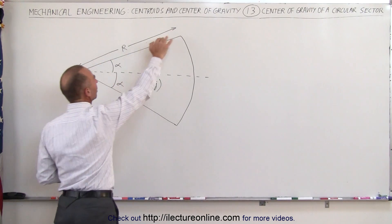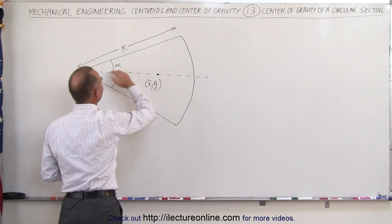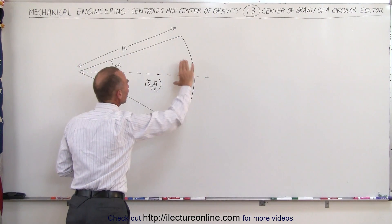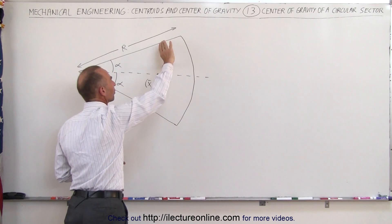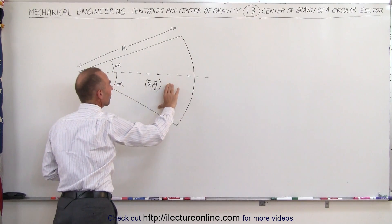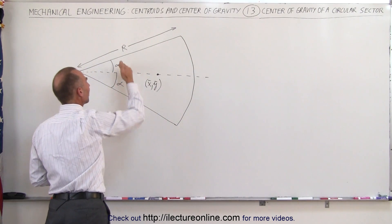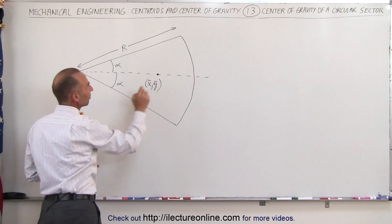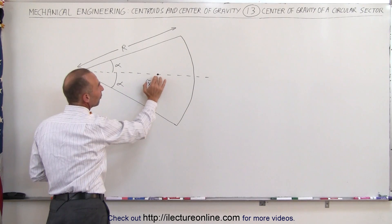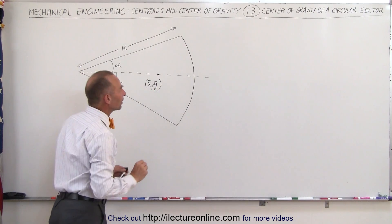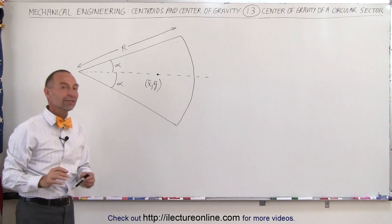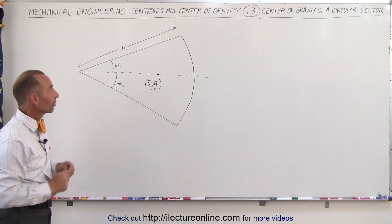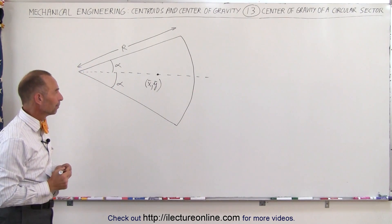Notice we have radius r. This is a line of symmetry, which means the top half looks exactly the same as the bottom half — we have the angle exactly the same. The center of mass will be somewhere around this particular location. The question is how do we find the exact location of that?